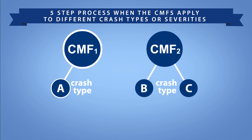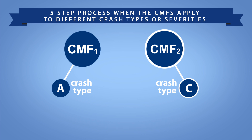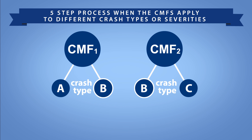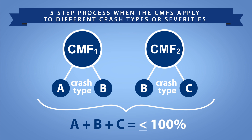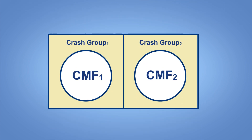When the CMFs apply to different crash types or severities, you need to follow a five-step process. First, apply the smallest CMF to applicable crashes excluding those crashes associated with other CMFs in the analysis. Second, apply the next smallest CMF to applicable crashes excluding those crashes associated with other CMFs. Third, estimate the CMF for the combined countermeasure effect and apply it to the applicable crashes common to both CMFs. Fourth, sum the estimated change in crashes. Fifth, check that the estimated change does not exceed 100%; if it does, assume a maximum reduction of 100%.